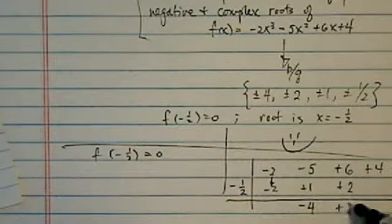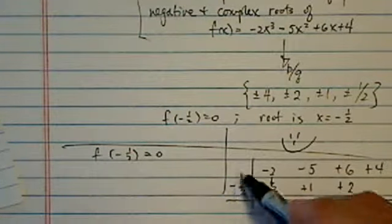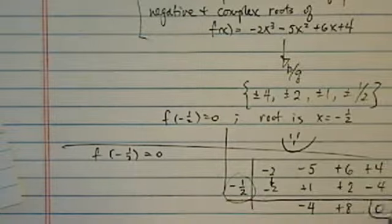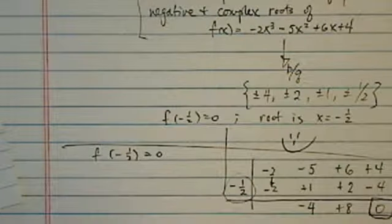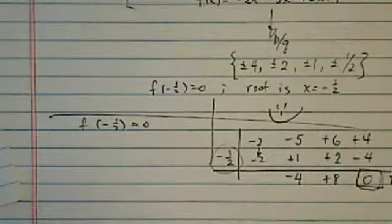And then times this one is plus eight times that. Minus half times plus eight, I have a minus four. So zero. Yay. So we have found our root.